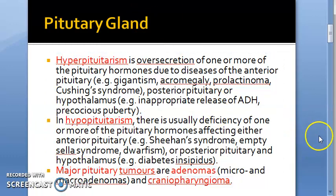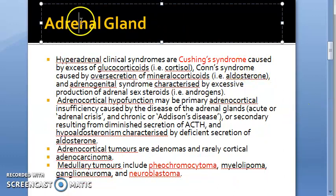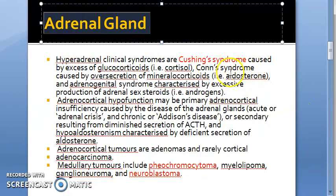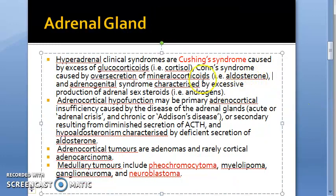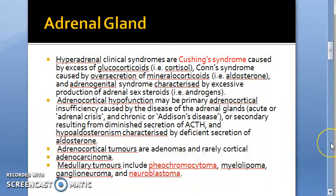Moving on to the adrenal gland — these topics have been asked in exams: Cushing syndrome, pheochromocytoma, and neuroblastoma.